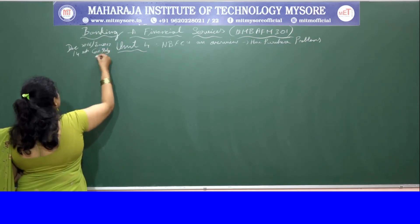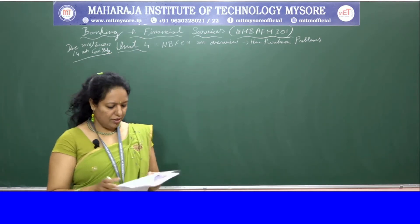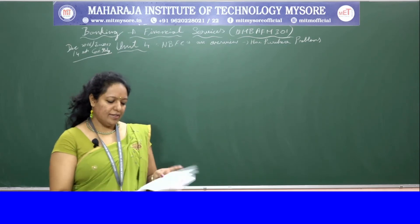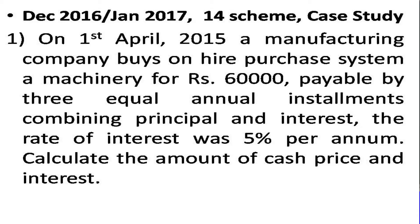So this is the problem which we are solving now. I will read out the problem for you. There are two questions in this, both based on hire purchase system. On 1st April 2015, a manufacturing company buys on hire purchase system a machinery for 60,000 rupees payable in three equal annual installments combining principal and interest. The rate of interest was 5% per annum.